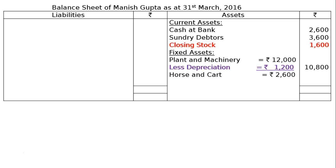Next is horse and cart (delivery van) Rs. 2600, less depreciation 15% on Rs. 2600 = Rs. 390, giving a final column value of Rs. 2210. Total of the asset side is Rs. 20,810. Depreciation on plant and machinery and delivery van is shown twice: once on the debit side of the profit and loss account, and once as a deduction on the asset side of the balance sheet. All adjustments are required to be shown in two places.